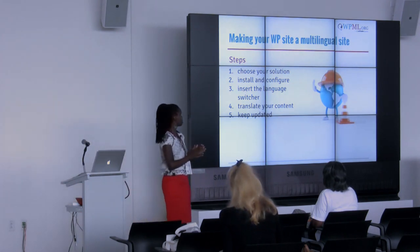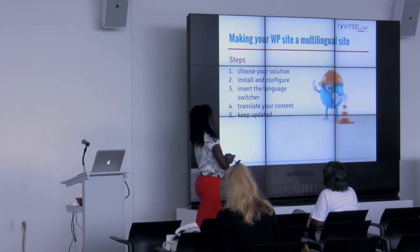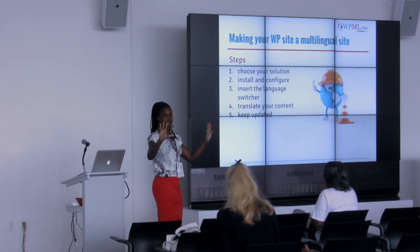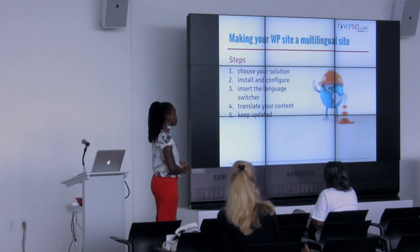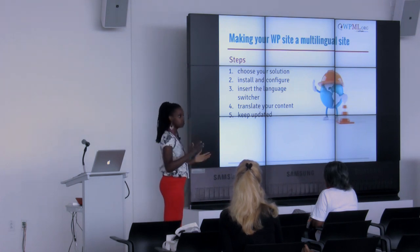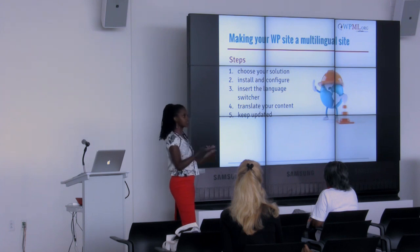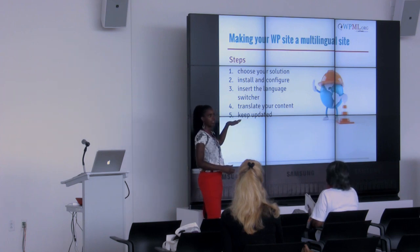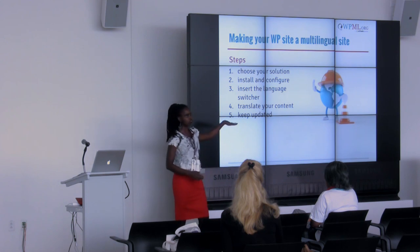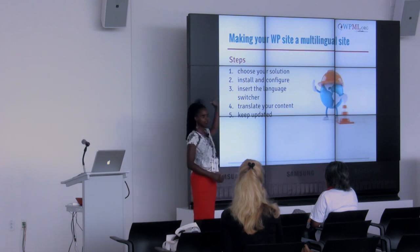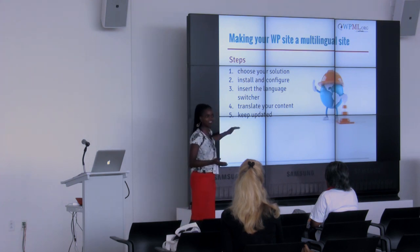So how do I make my site multilingual? First, choose your solution. Second, install and configure it. Third, insert your language switcher — whether that's flags, country maps, or language names written out. Fourth, translate your content. And fifth — this is the part a lot of websites fall down on — keep it updated. Number five relates to number one: if you have a solution that is clunky, hard to use, or hard to figure out, keeping content updated will never happen.